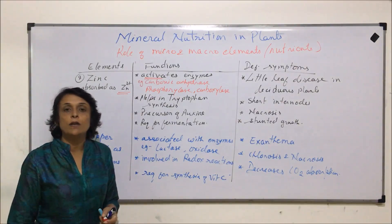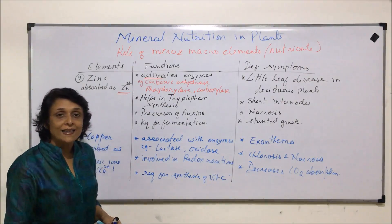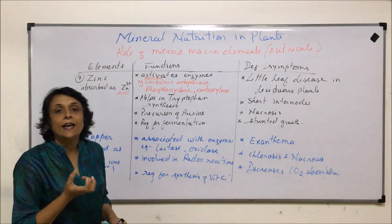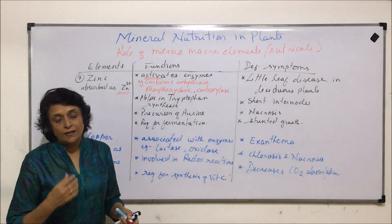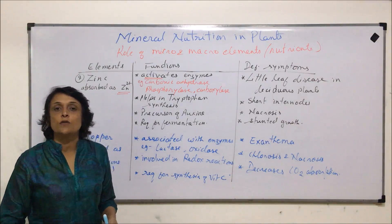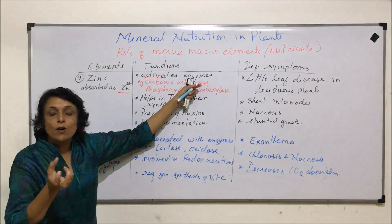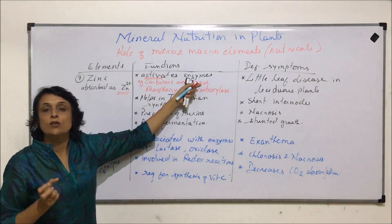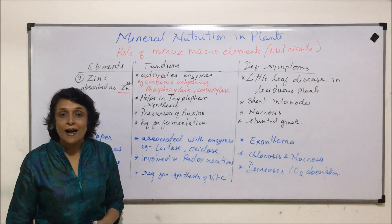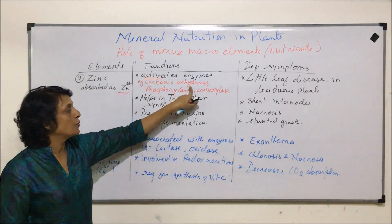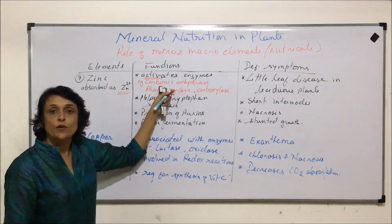Carbonic anhydrase is the enzyme which helps in the reaction of water with carbon dioxide to form carbonic acid, followed by its dissociation to form bicarbonate ions. This bicarbonate ion is accepted by RuBP in the presence of RuBisCO during photosynthesis, so carbon dioxide is converted to bicarbonate for use in the Calvin cycle.